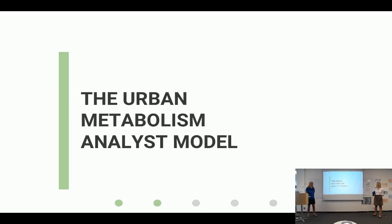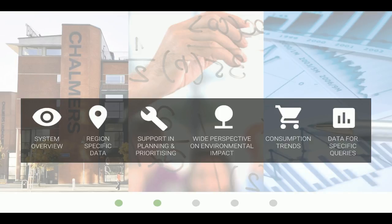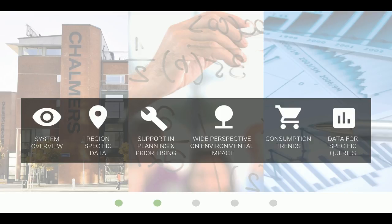Now that we have a bit of theoretical context, let's move forward to the Urban Metabolism Analyst model. The UMAN model, currently being developed here at Chalmers, was created to provide overviews of flows on an urban level. It accounts for flows of materials as well as approximately a thousand product types, and all flows are measured in terms of mass — so the metric is tons. Work is now being done to combine this data with Life Cycle Assessment, or LCA, profiles, meaning you can get information not only about the mass of a flow but also its environmental impact.